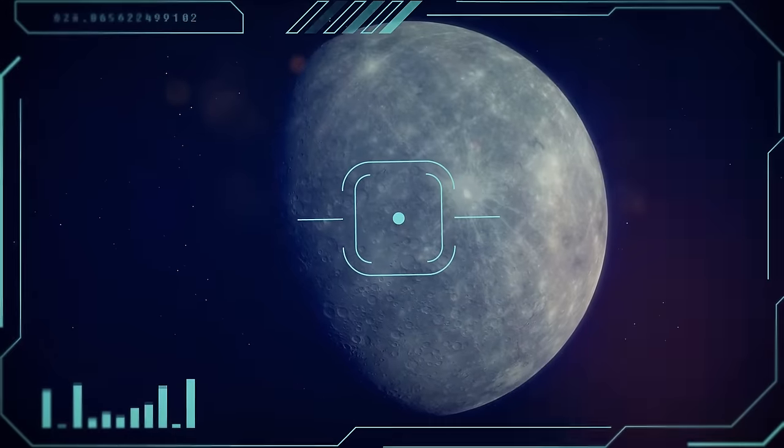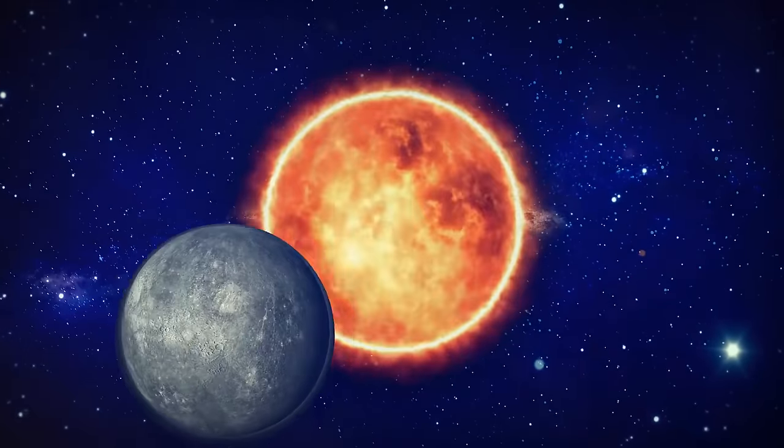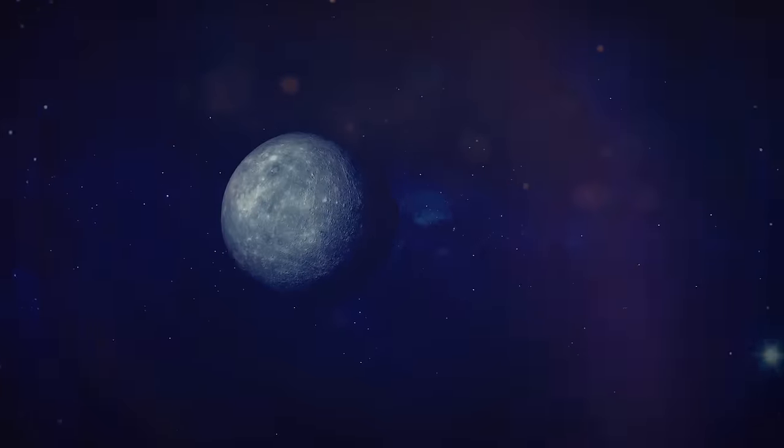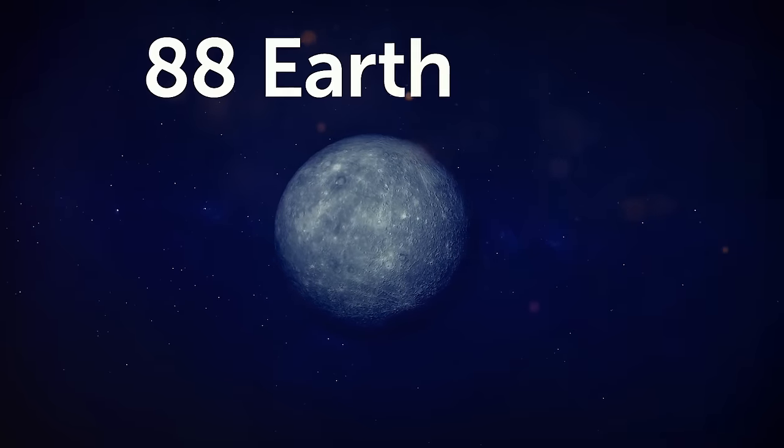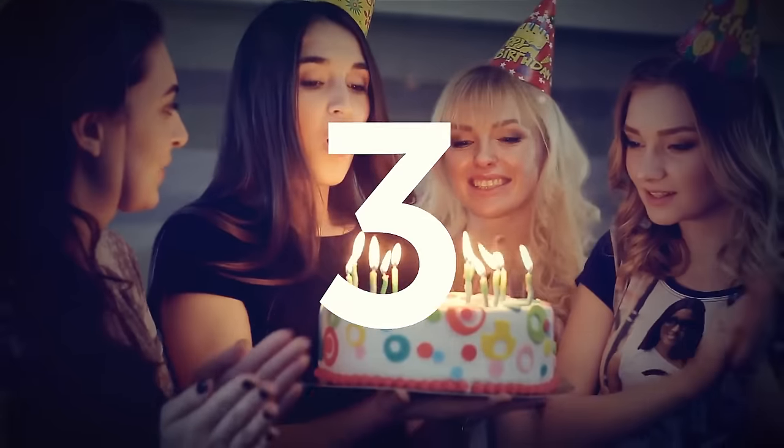With all these craters, Mercury looks similar to our Moon. It orbits the Sun faster than the other planets, so one year on Mercury lasts around 88 Earth days. That means celebrating a birthday every three months or even more often.